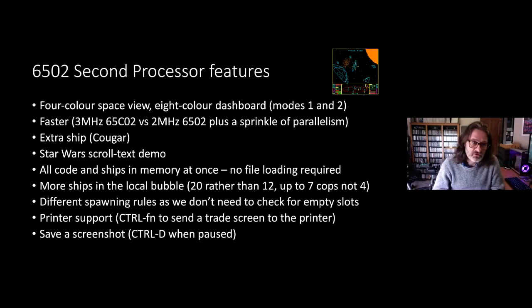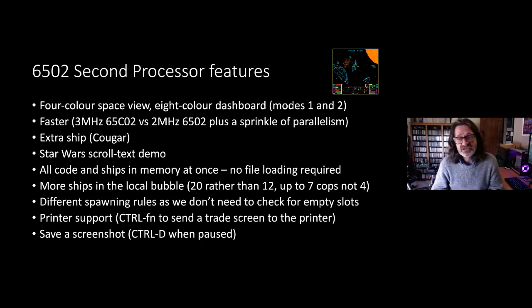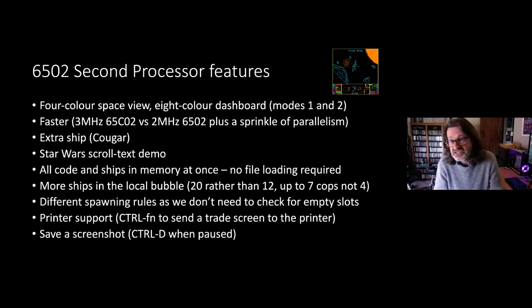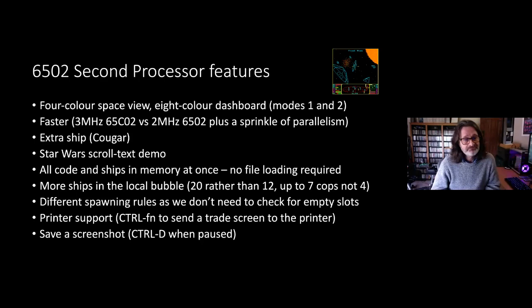The 6502 second processor version runs on the Tube. The main difference is it's color — a four-color space view instead of just black and white, and an eight-color dashboard, using modes one and two rather than modes four and five because it has extra memory in the second processor. It's pretty garish — very 80s. It's also a lot faster, which makes it quite a bit harder to play because you don't get the handy slowdown when there are lots of ships. That's because it runs on the faster 3 MHz 65C02 as opposed to the 2 MHz 6502 in the BBC, plus it has a sprinkle of parallelism.